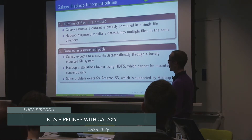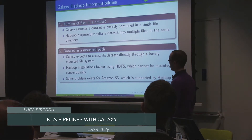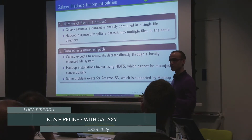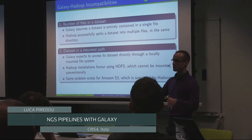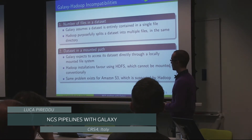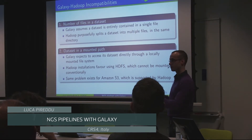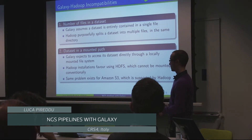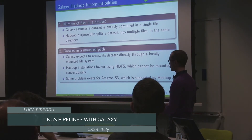The first issue is the number of files in a data set. Galaxy assumes that a data set is a single file, whereas Hadoop purposefully splits data sets into multiple files because as a distributed system it splits your job into many tasks, each running on a different node, each generating its own output file. The other problem is data sets in a mounted path. Galaxy expects whatever data sets you're working on to be directly accessible on the machine where Galaxy is running. Hadoop, on the other hand, favors using its distributed file system, which cannot be used like a normal file system - so whatever we generate with Hadoop cannot be accessed directly from Galaxy.